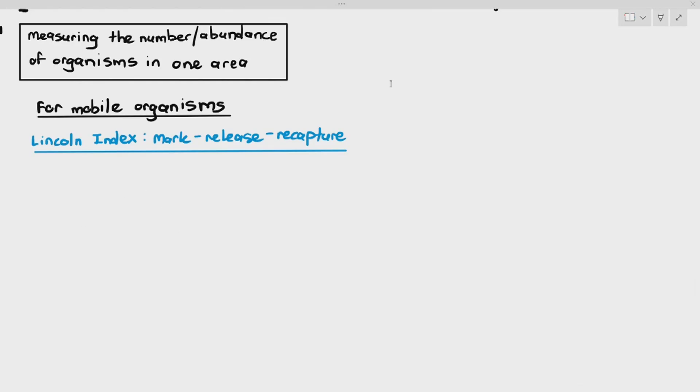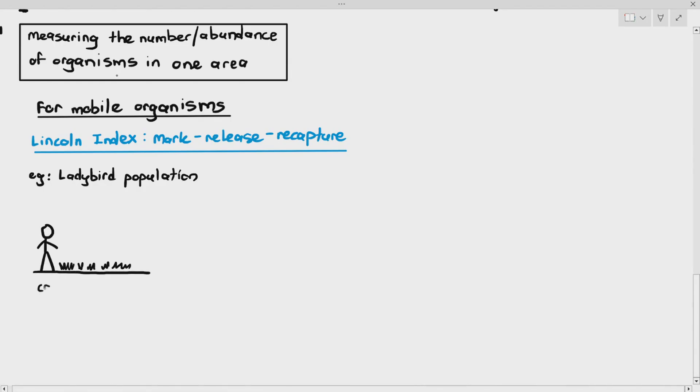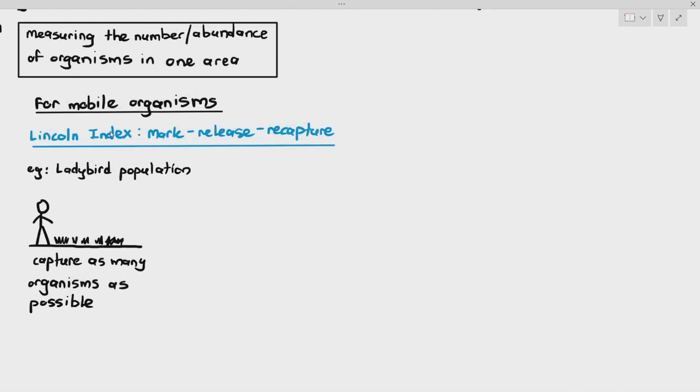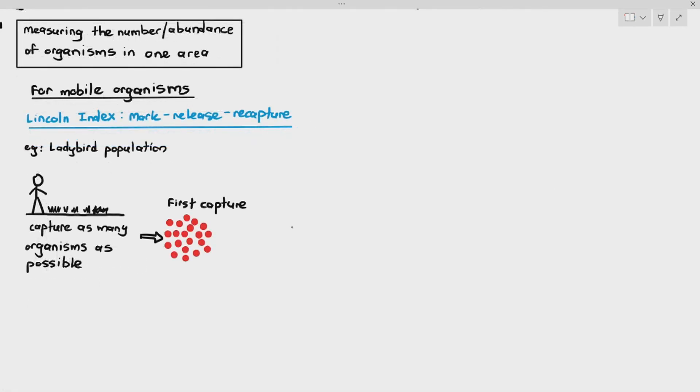So what you do in those cases is we will do something called the Lincoln Index, also referred to as the mark-release-recapture method. The first thing you do is you will determine just one section of the field or the habitat. And what you do is you capture as many ladybirds or organisms as possible. How you capture them? Usually you can use a net or something known as a pooter. When you catch the organisms, it is very important to note that the way you capture the organisms have to be humane. It means that you are not capturing them by putting them into significant harm.